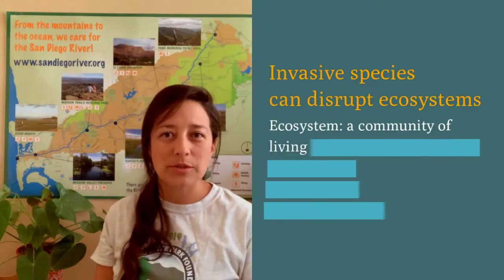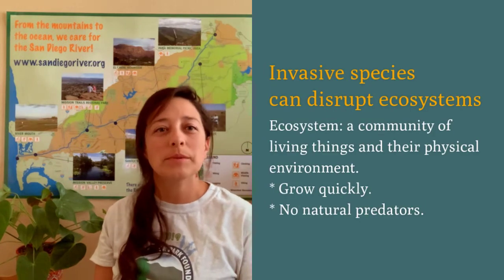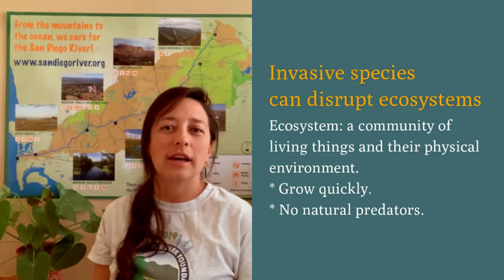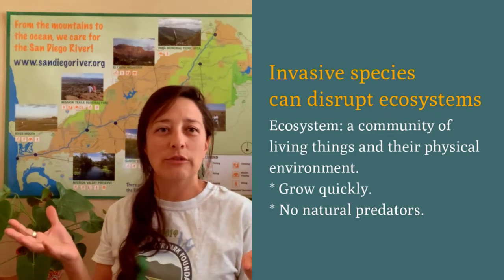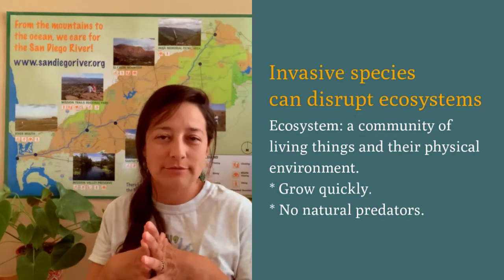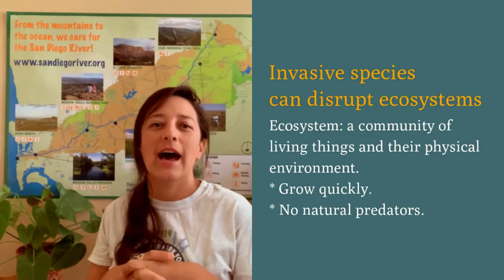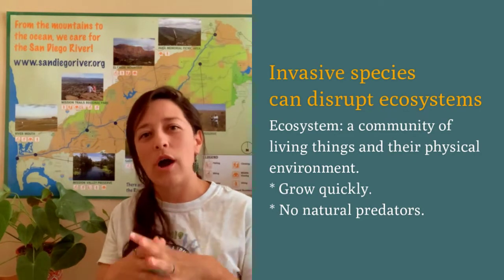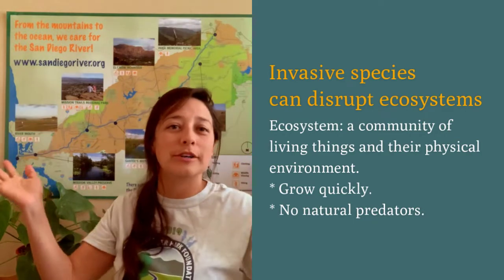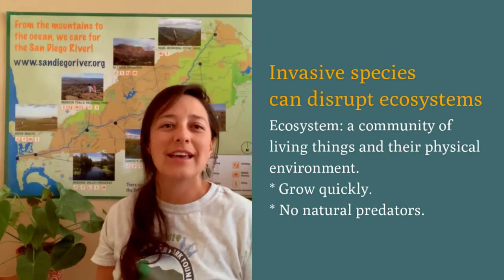Invasive animals and plants can disrupt the balance of an ecosystem, which is a large community of living things and their physical environment. For example, an ecosystem includes the soil, the rocks, the water, the trees, the bugs, the birds, the animals.